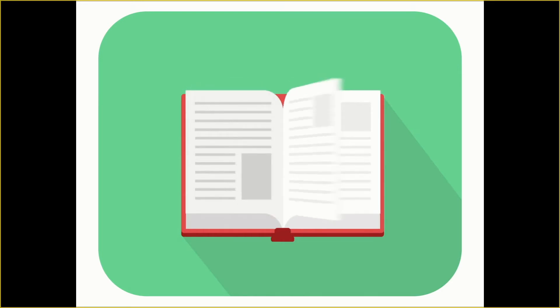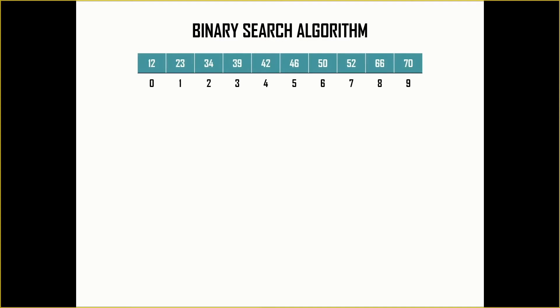Now let's try to understand binary search algorithm. So here is the list of numbers which are already sorted in ascending order, and below each element is the index or the position of that particular element in the array. Let's say the number that I want to search is 46.